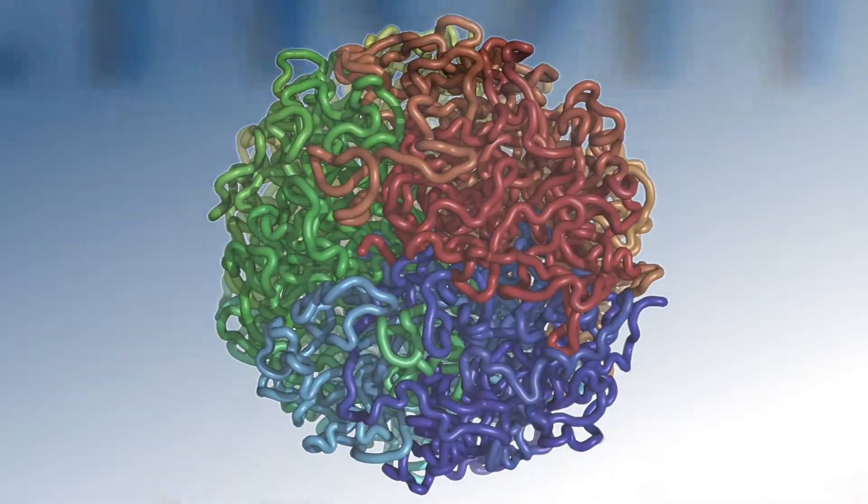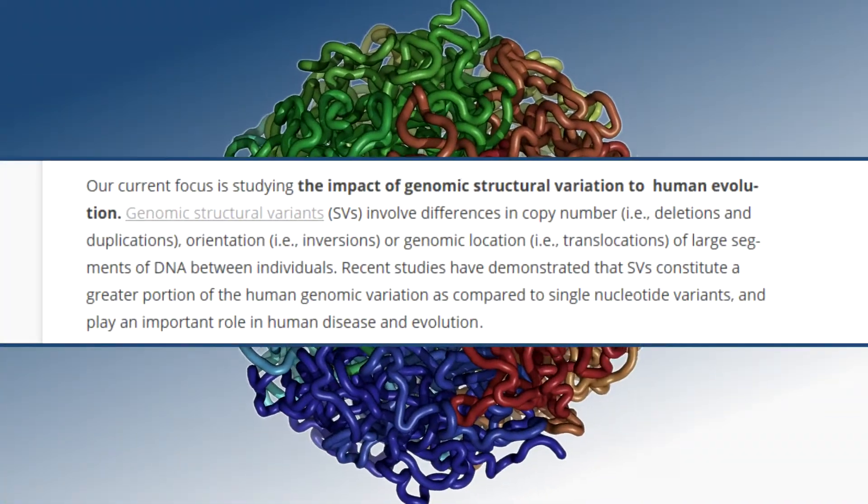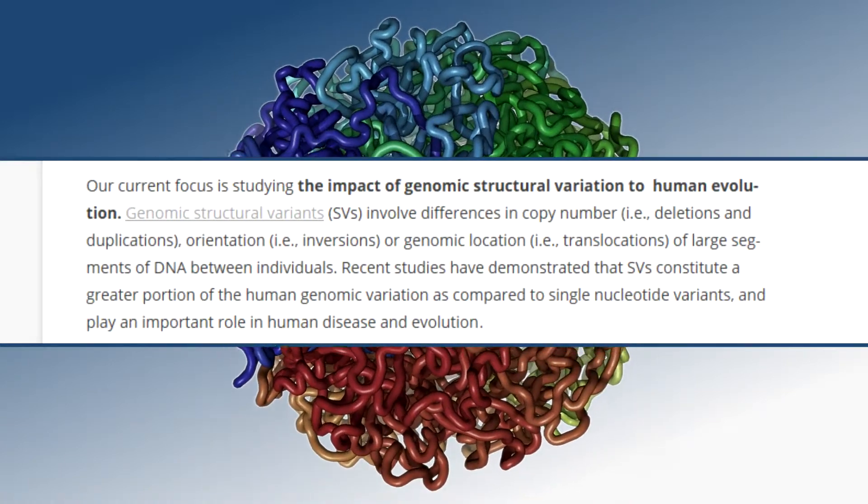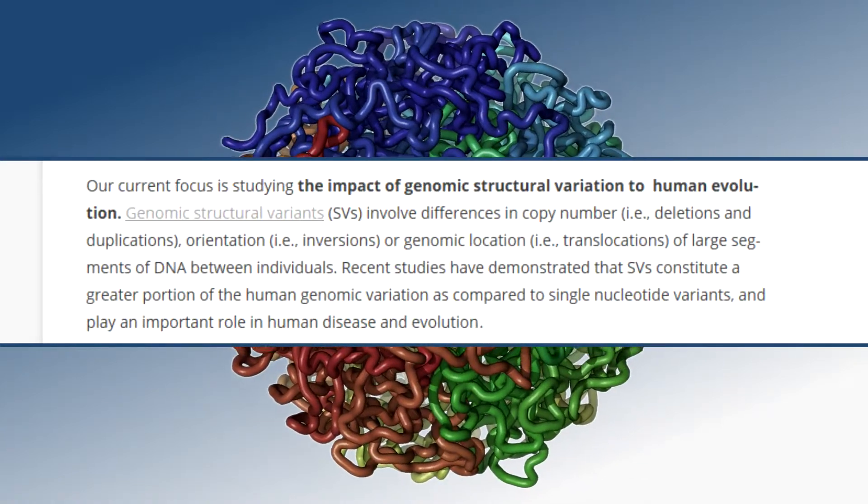Structural variation, or genomic structural variation, is when you compare two genomes. We have about three billion chemical letters that define our genomes. When genomicists and geneticists compare two genomes, they focus on single letter changes, which constitute about 0.1% of the variation. But what we found recently is that large sentences — not single letters but large sentences — are actually deleted, duplicated, or reversed in some genomes compared to others. These are called structural variants.